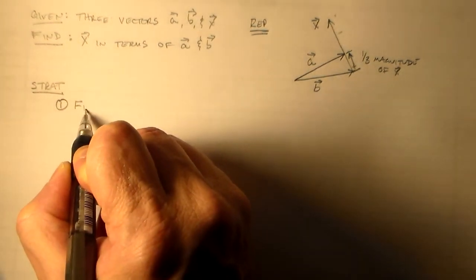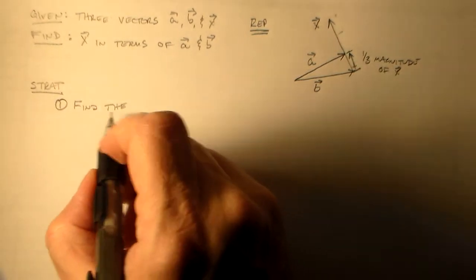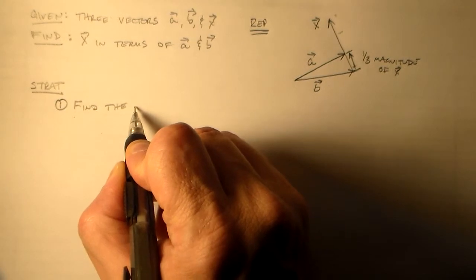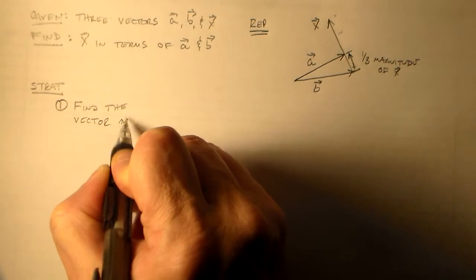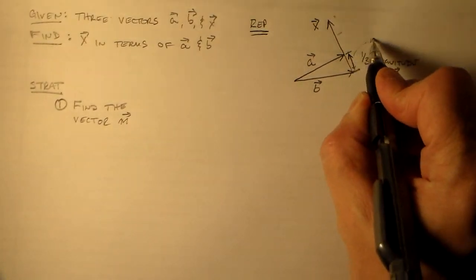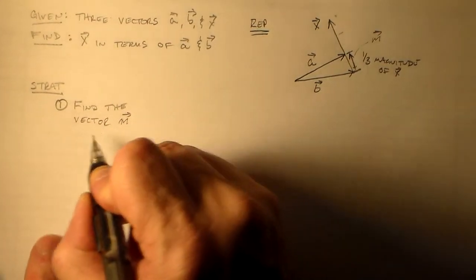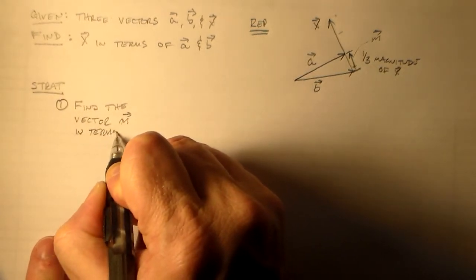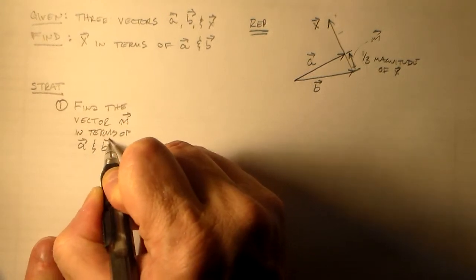So, let's find the vector m. So this sort of midpoint vector m. I guess not midpoint, but magnitude, one third of magnitude vector m, in terms of a and b. Sounds good to me.